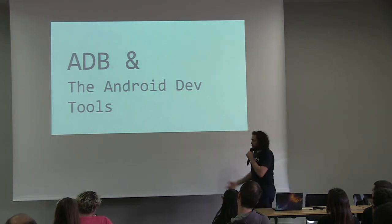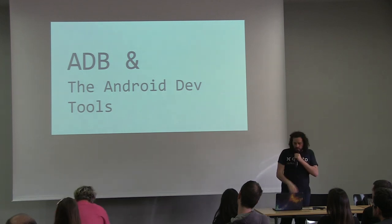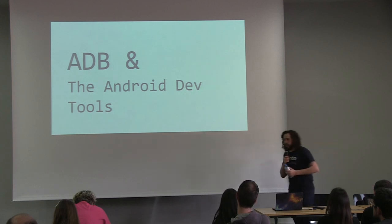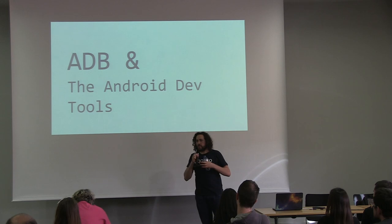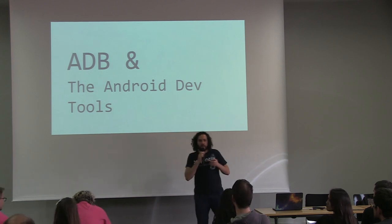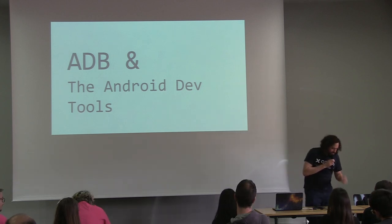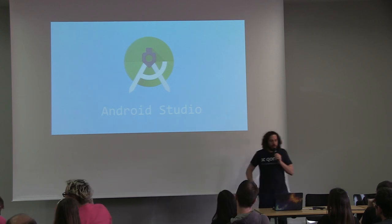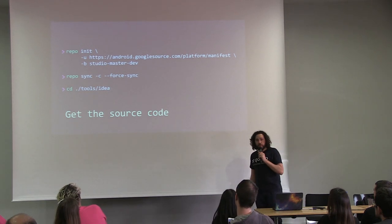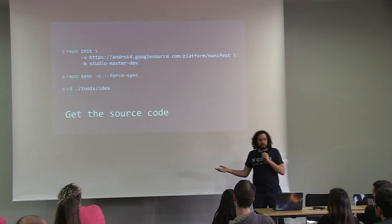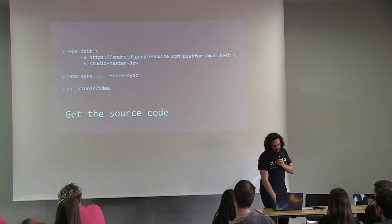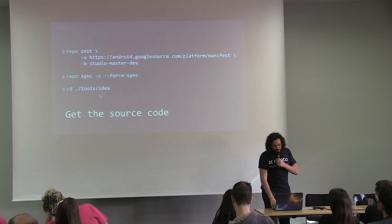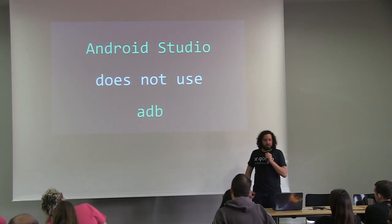The last part of this talk is how Android dev tools are using ADB — hopefully something you can use tomorrow in your daily job. First tool: Android Studio. Big news: Android Studio does not use ADB. Almost. Actually, Android Studio uses DDMLIB. Do you remember DDMS? You can see the bad naming. DDMLIB is a Java library that behaves like an ADB client, and it's also part of the AOSP code.